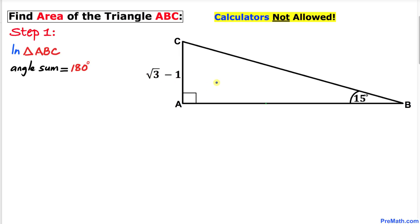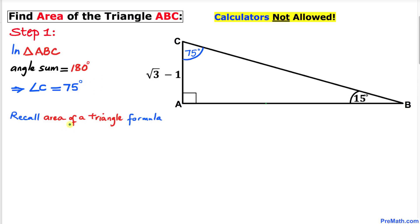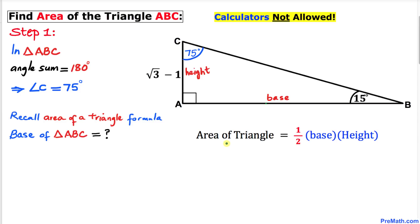Let's focus on triangle ABC. Angle B is 15 degrees, angle at the right angle is 90 degrees, so angle C has got to be 75 degrees. Now let's recall the area of a triangle formula: area equals one half times base times height. Our height is known, which is √3 minus 1, and the base AB is unknown, so we are going to calculate side length AB.